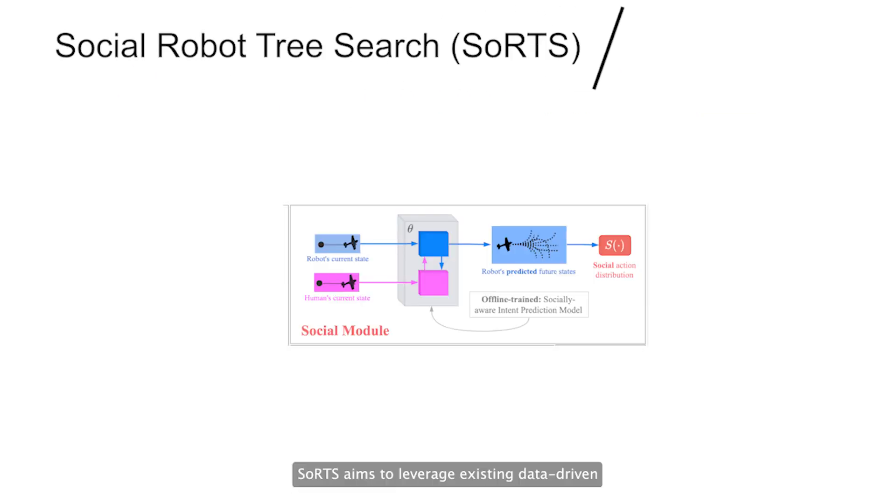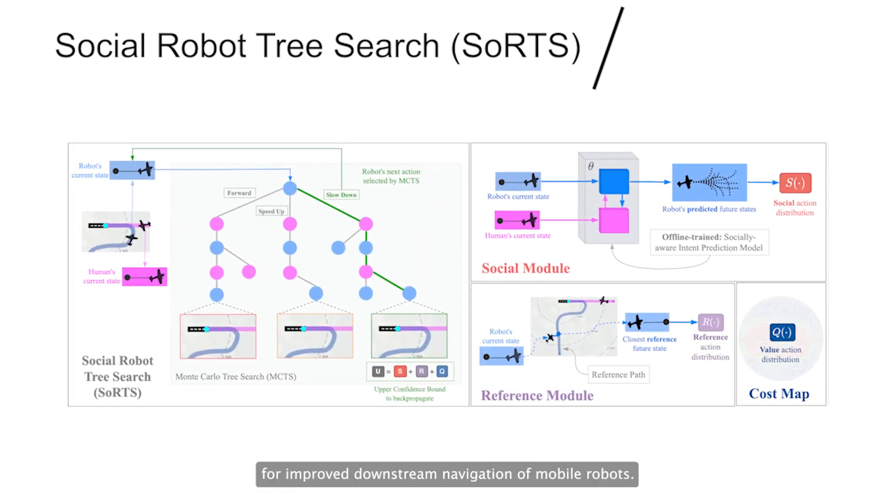SORTS aims to leverage existing data-driven socially aware trajectory prediction algorithms with a Monte Carlo Tree Search Planner for improved downstream navigation of mobile robots.